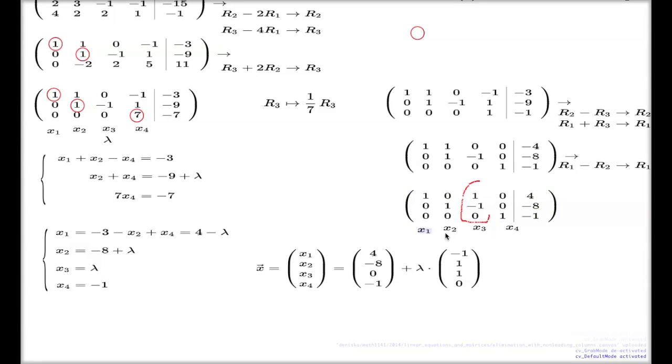But second line can be used to find the value for x2. From here, it will be negative 8 plus lambda.